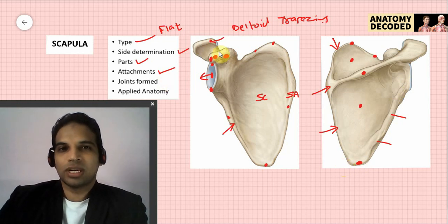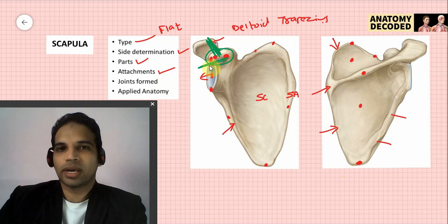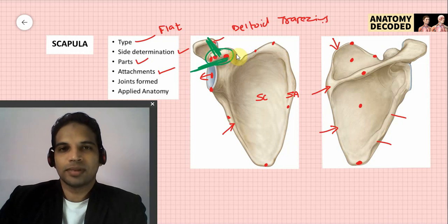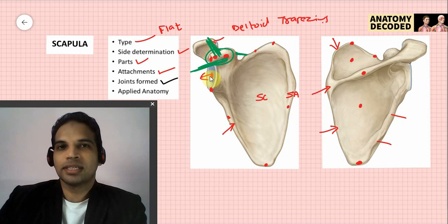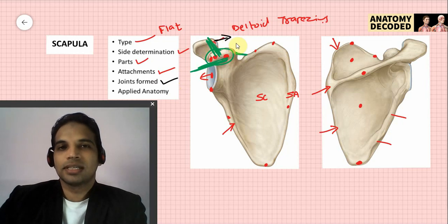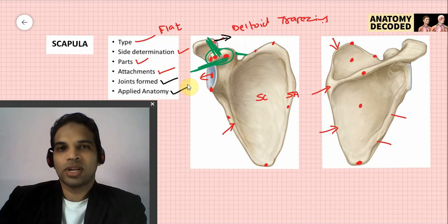Ligaments attached to the scapula via the coracoid process include: coracoacromial ligament, coracohumeral ligament, and coracoclavicular ligament. There is also the suprascapular ligament. Joints formed by the scapula: the glenoid cavity articulates with the head of the humerus forming the shoulder joint, a ball and socket variety of synovial joint. The acromion process articulates with the clavicle forming the acromioclavicular joint, a plain variety of synovial joint.